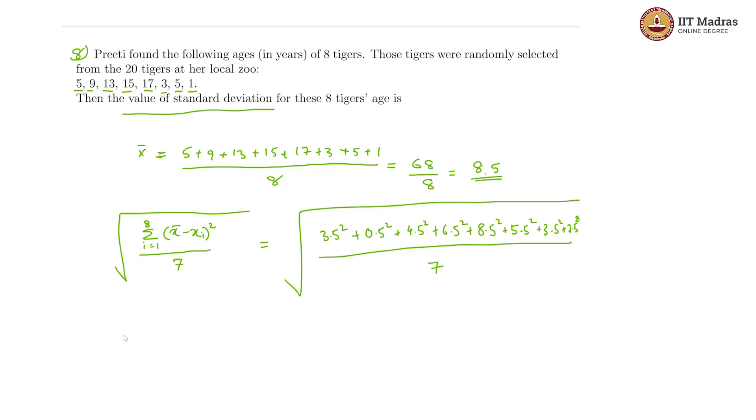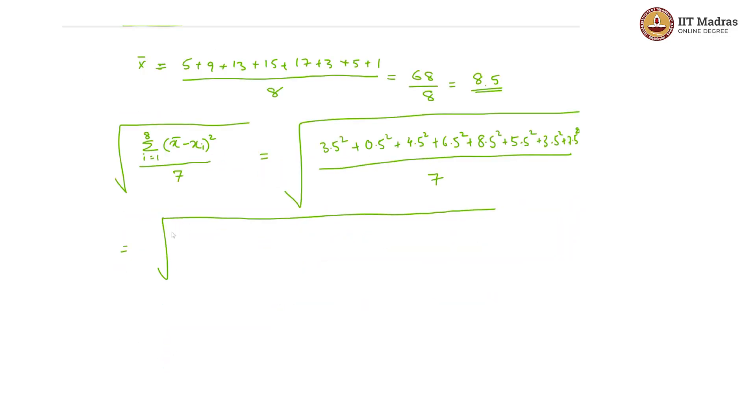So this gives us the square root of 12.25 plus 0.25 plus 20.25 plus 42.25 plus 72.25 plus 30.25 plus 12.25 again plus 56.25, the whole thing divided by 7.